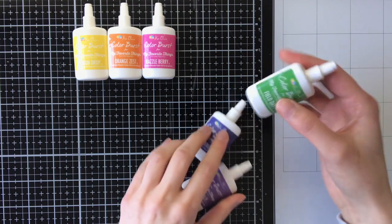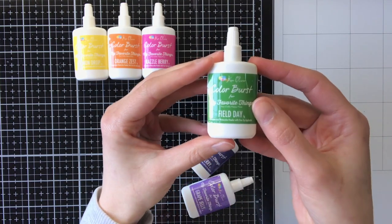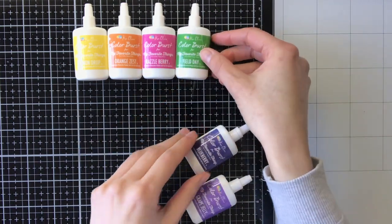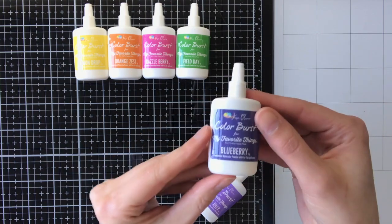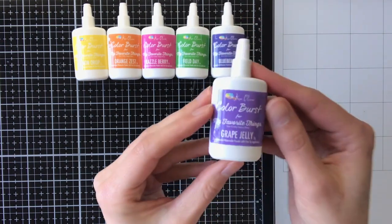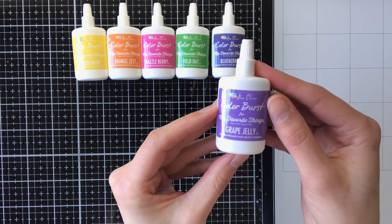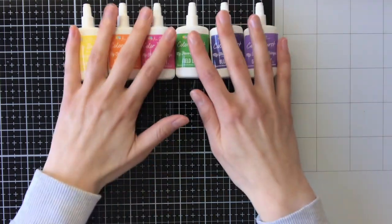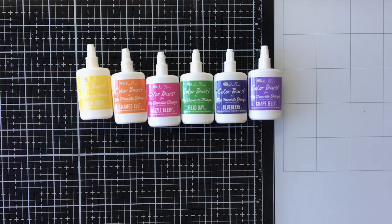These powders come in two different sets - one is called Sunrise and the other is called Night Sky. The Sunrise set has Lemon Drop, Orange Zest, and Razzleberry. The Night Sky set contains Field Day, Blueberry, and Grape Jelly.